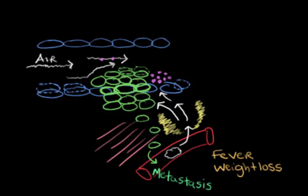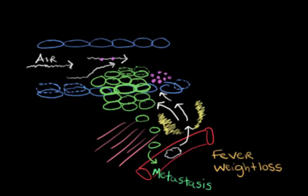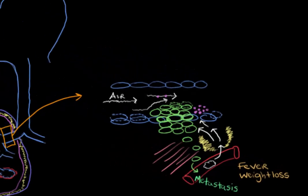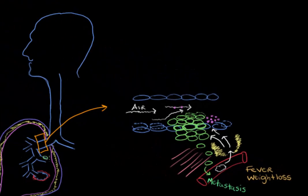Lung cancer cells can also migrate into the lung lining. They can migrate through the lining where that protein-rich fluid cradling the lungs is located. An immune response to cancer cells there is going to cause swelling, and that swelling takes up space from the lung and makes it even more difficult to breathe.